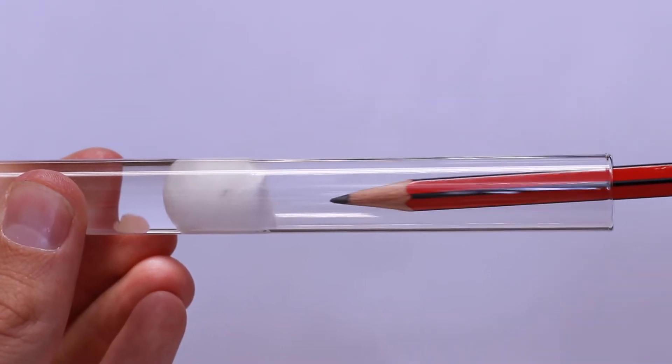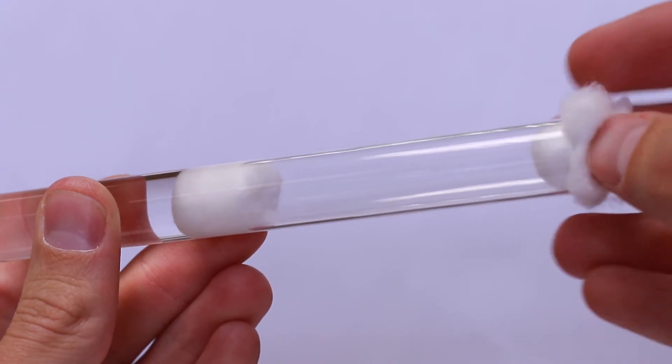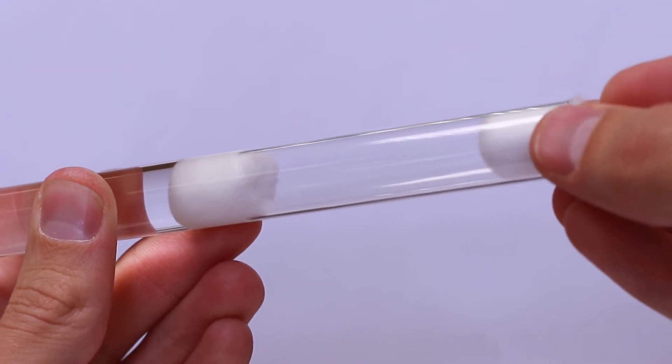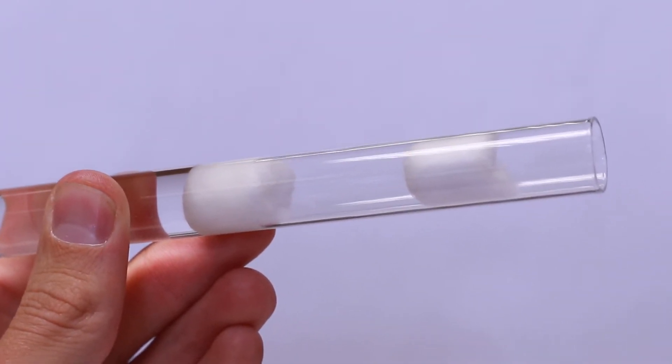Next, you will add your queen ant and then plug it with another piece of cotton wool to stop her from escaping and to close her in a claustral chamber where she will lay her eggs and start the colony.